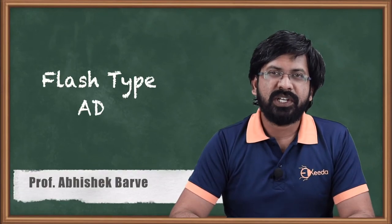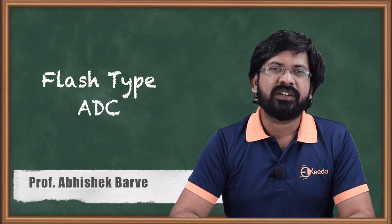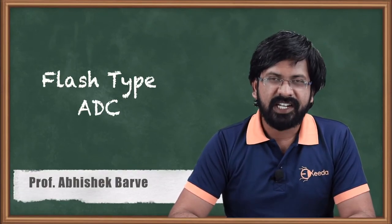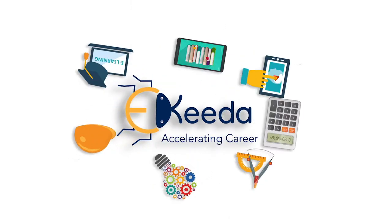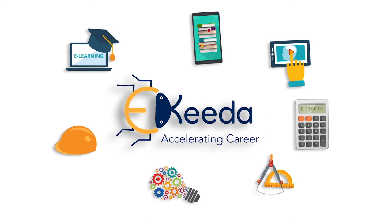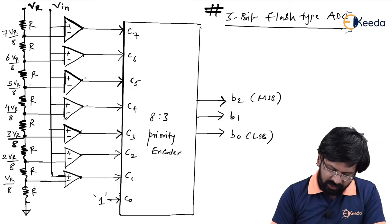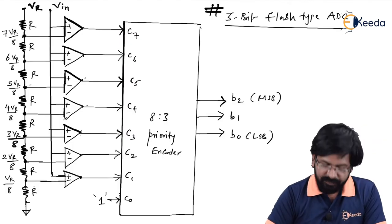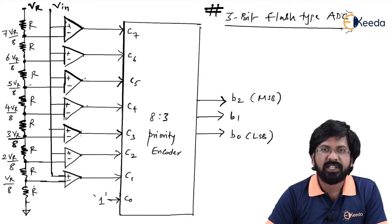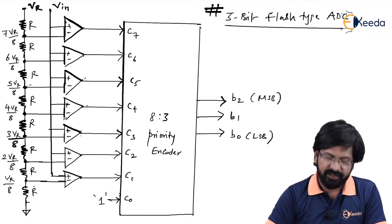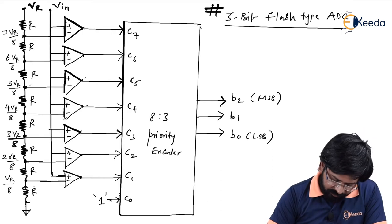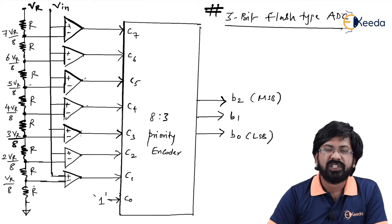Hello friends. In this video we will learn flash type ADC. To understand flash type ADC on a smaller scale first, we'll take an example of a 3-bit flash type ADC. The hardware shown on the screen is a 3-bit ADC.